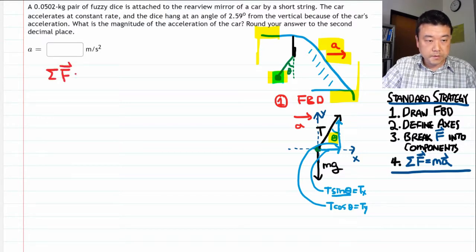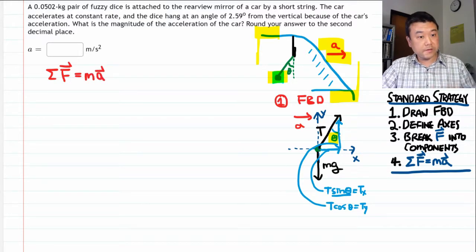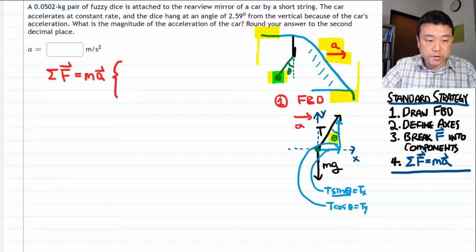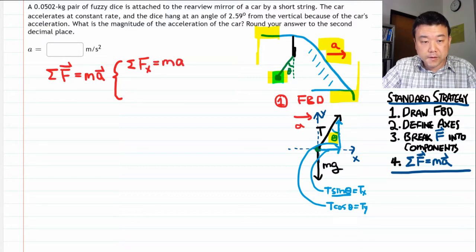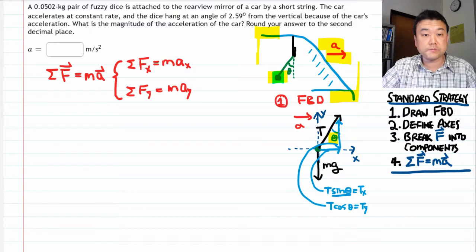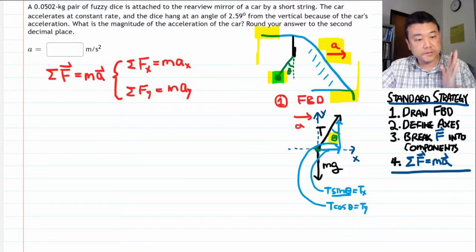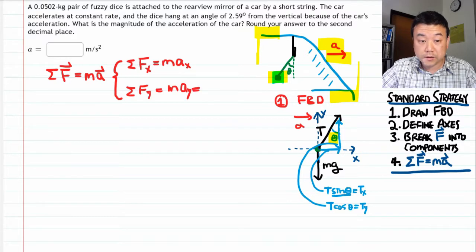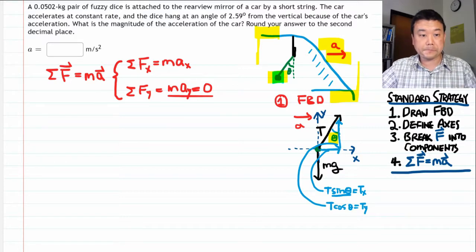Now we are ready to write the Newton's second law equations. Net force is equal to mass times acceleration. And a reminder, this stands for actually two equations. Net force along the x direction is equal to mass times x component of acceleration. And the net force along the y direction is equal to mass times acceleration along the y direction. And here, because of how we did step number two, the y component of acceleration is zero by design, and that will make some of our equations simpler.